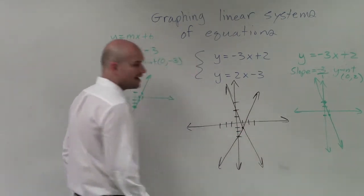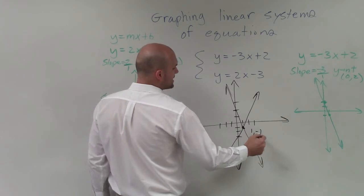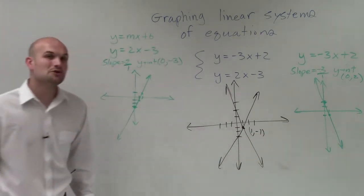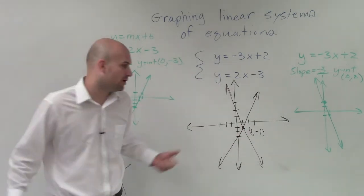And you can see that now they cross at my coordinate point 1, comma, negative 1. That means the solution to this linear equation is their intersection point at 1, comma, negative 1.